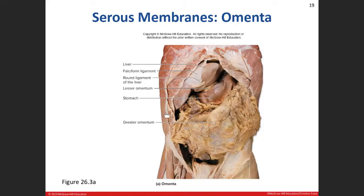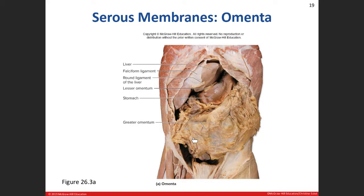The greater omentum can move to an area of inflammation in the peritoneum and help treat it. Parts of the serous membrane have extensions called mesentery — for example, the falciform ligament, which comes off the anterior surface of the liver and attaches to the anterior abdominal wall, holding the liver to the front of the abdominal wall.